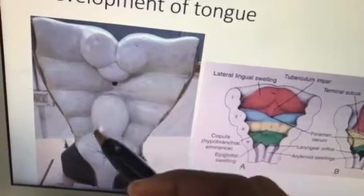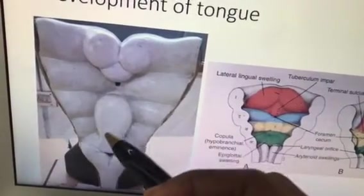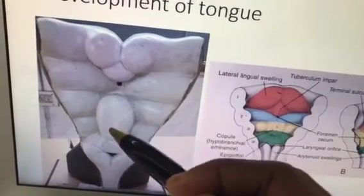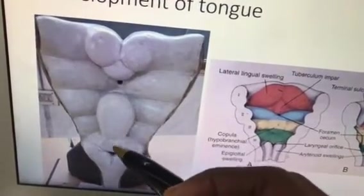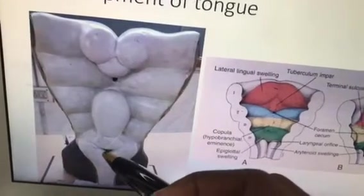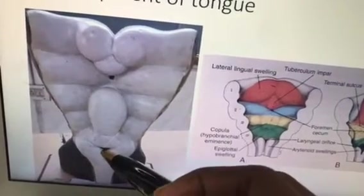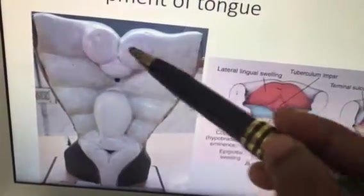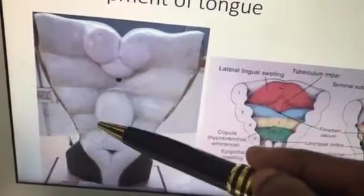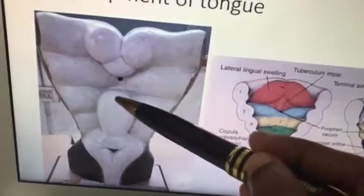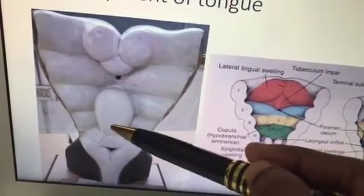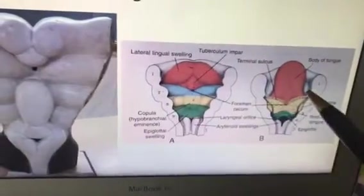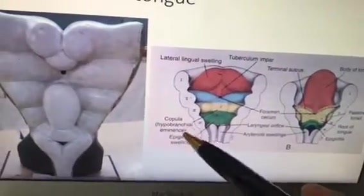Here is the foramen cecum, and this is called the hypobranchial eminence. Its cranial portion transforms into the posterior one-third of the tongue and the caudal portion into the epiglottis. Since the anterior two-thirds come from the first arch, it is supplied by the lingual nerve, and since the posterior one-third comes from the third arch, it is supplied by the glossopharyngeal nerve.